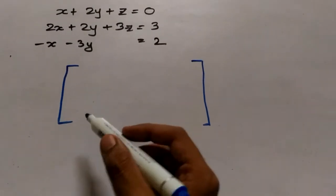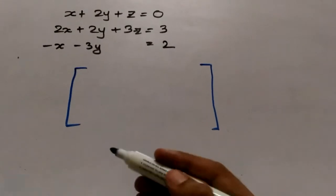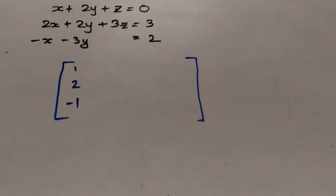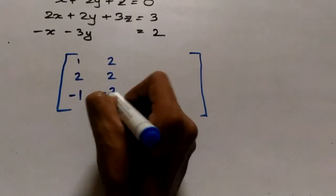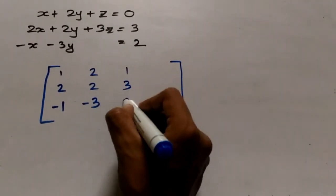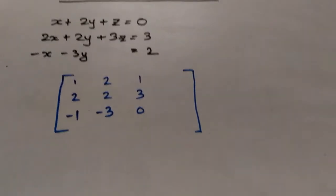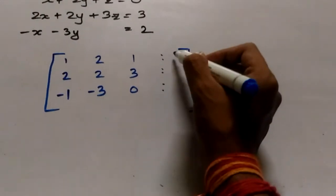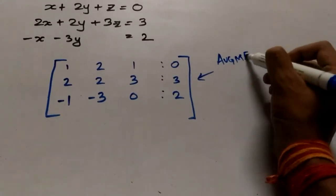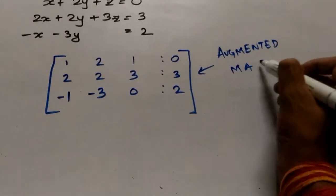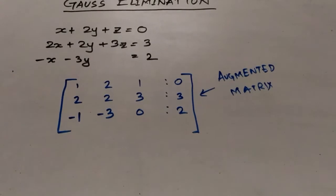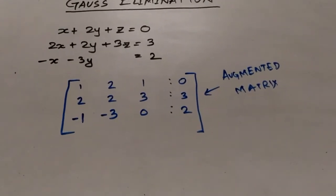The coefficients of x in the three equations go in the first column: 1, 2, and minus 1. Then we write the coefficients of y in the second column: 2, 2, and minus 3. Then the coefficients of z in the third column: 1, 3, 0. And lastly we write the constant terms. This matrix is known as the augmented matrix — a matrix containing the coefficients of the variables and the constant terms.